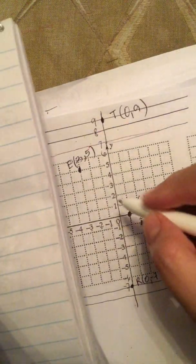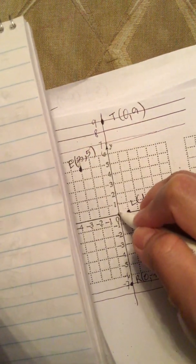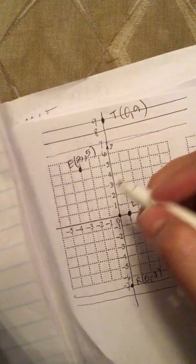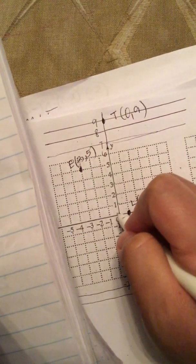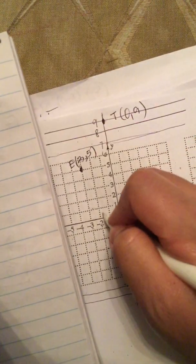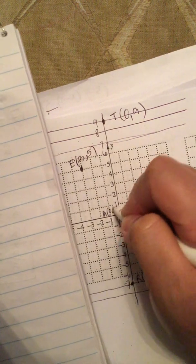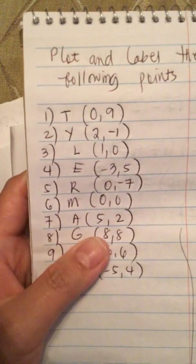The next one is zero comma zero, and that's the origin. So this is the point zero comma zero.